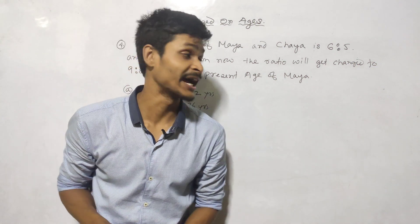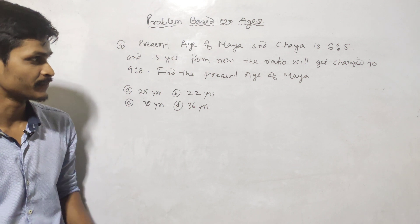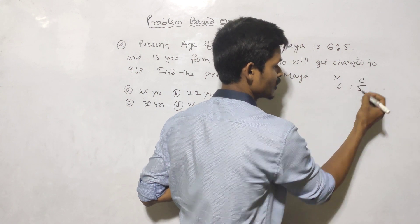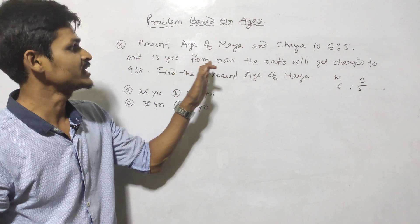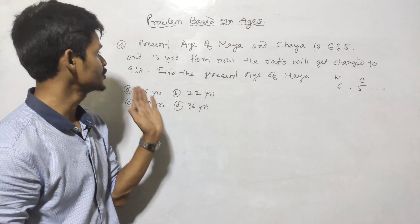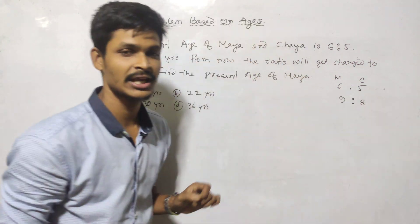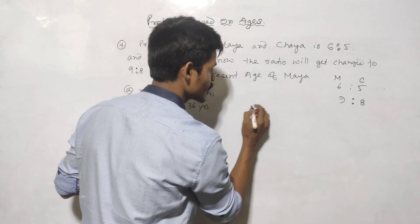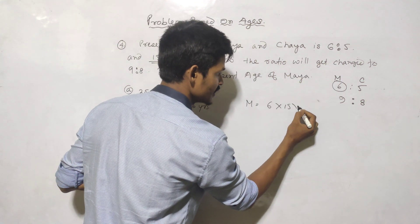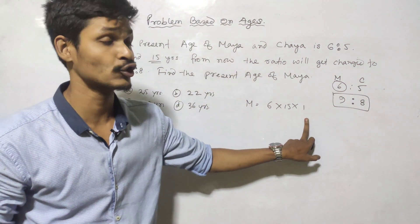Now question number 3. The present ages of Mayar and Chaya are in ratio 6 to 5. 15 years from now, the ratio of Mayar and Chaya will be 9 to 8. The difference in the second ratio is 9 minus 8 equals 1.